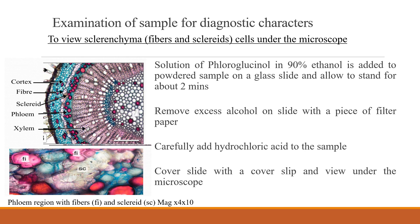The chemical nature of the cell wall of stem bark samples can also be used as a form of diagnostic character. The fibers and sclerid type of sclerenchyma cells can be viewed under the microscope by the addition of a solution of fluoroglucinol in ethanol to the powder sample placed on a glass slide. The sample is allowed to stand for about two minutes, excess alcohol is removed from the slide with a piece of filter paper, and hydrochloric acid is carefully added before the slide is covered and viewed.